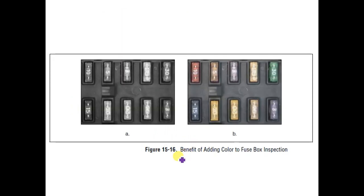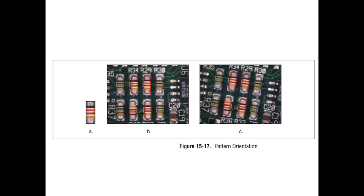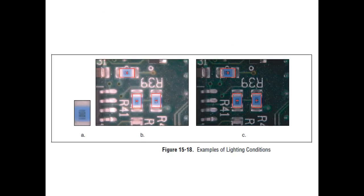The benefit of adding color to the inspection process is that without color you need to do pattern matching over the whole image, which takes a lot of time. Addition of color helps in identifying things in a proper and quick manner. Color also helps in getting the orientation correctly. Under varying lighting conditions, both color matching and color inspection with pattern matching are not overly dependent on lighting conditions. Thank you very much for your kind attention.